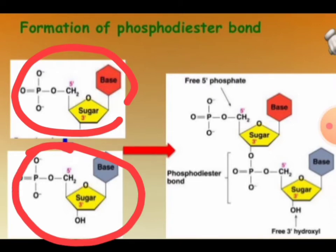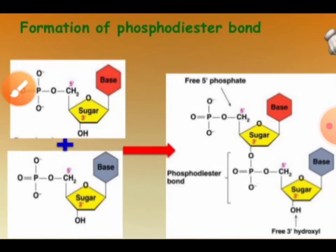First of all, a nucleotide is a combination of a nitrogen base, pentose sugar, and phosphoric acid. This combination of nitrogen base, pentose sugar, and phosphoric acid is called a nucleotide.